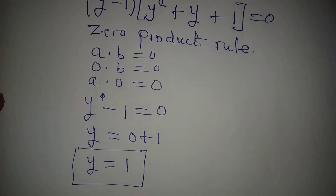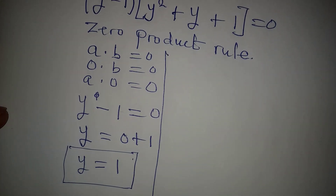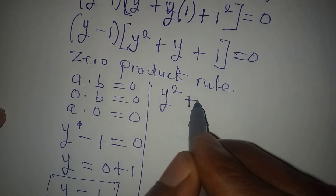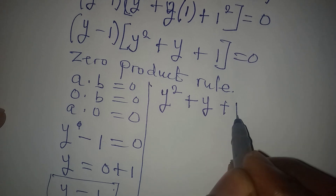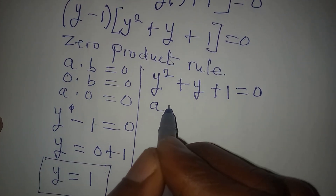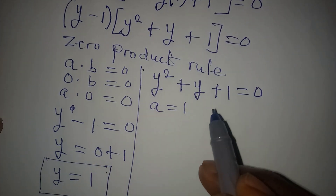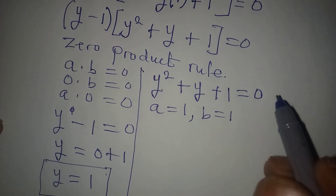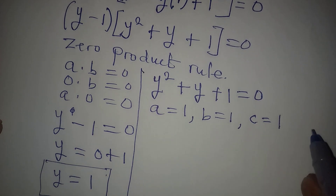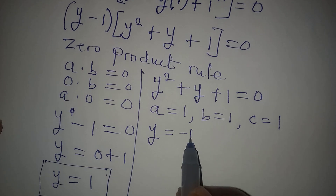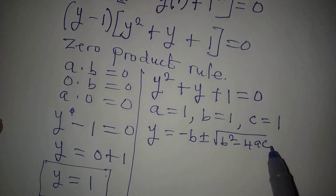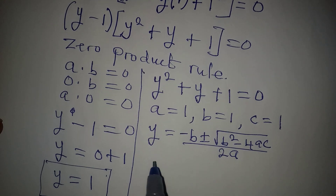To get the other values of y, we take the quadratic expression: y squared plus y plus 1 equals 0. Here, a equals 1 (the coefficient of y squared), b equals 1 (the coefficient of y), and c equals 1. We put all of this into the quadratic formula: y equals minus b plus or minus the square root of b squared minus 4ac, all over 2a.